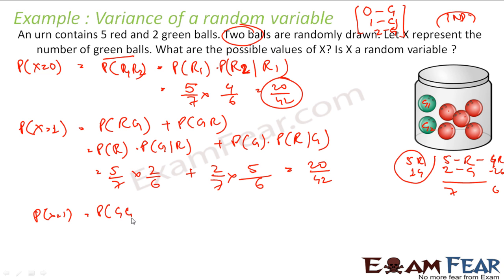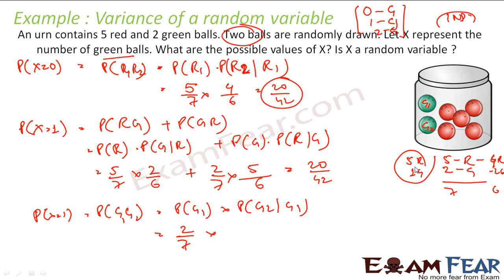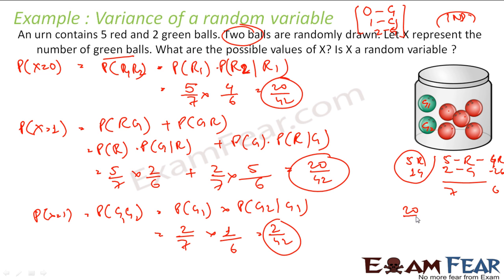For P(X=2), both balls are green: P(green1) × P(green2 | first was green) = 2/7 × 1/6 = 2/42. If you add all values: 20/42 + 20/42 + 2/42 = 42/42 = 1. Since all values are less than 1 and they sum to 1, yes, x is a random variable. The key here was that it is not an independent event.